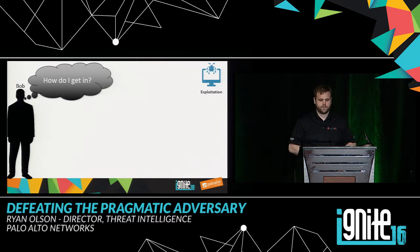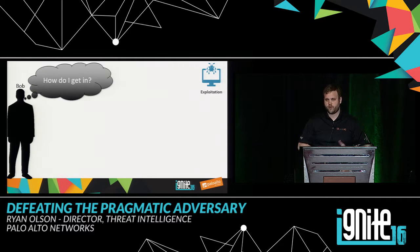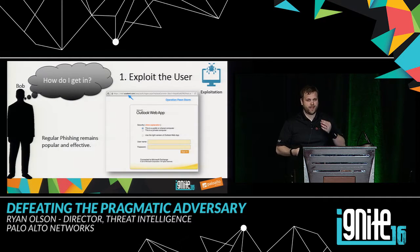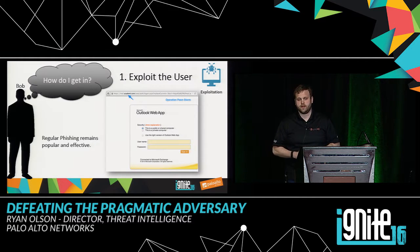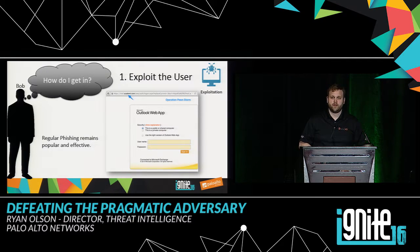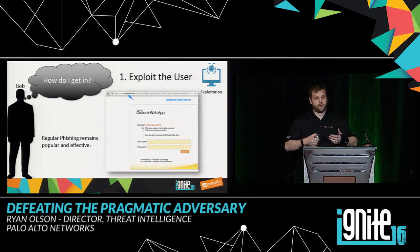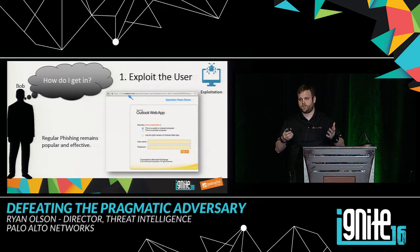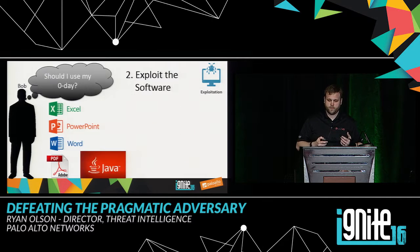Now Bob is thinking: how am I going to get into the network? We talked about spear phishing and watering holes exploiting technical vulnerabilities, but in a lot of cases it's a lot easier just to exploit the user. It's unfortunate in 2016 that phishing remains as effective and popular as it is. Social engineering is pretty effective. If Bob knows you use Outlook Web Access and sends an email that looks like an OWA form saying your password has expired, users get those all the time. If you don't have two-factor authentication, he can now get to that user's email or log in via your VPN.